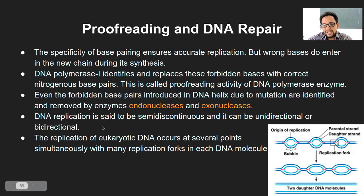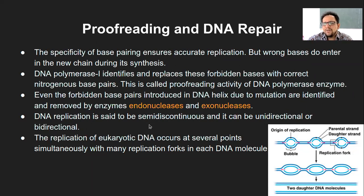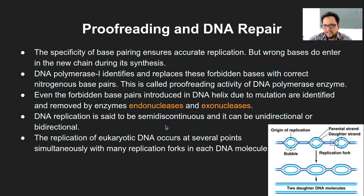The DNA replication is said to be semi-discontinuous. Why semi-discontinuous? Because it can be either unidirectional or bi-directional depending on the organism — eukaryote or prokaryote — and there are several such distinctions. But it is semi-discontinuous mainly because of the lagging strand, where Okazaki fragments form in pieces.